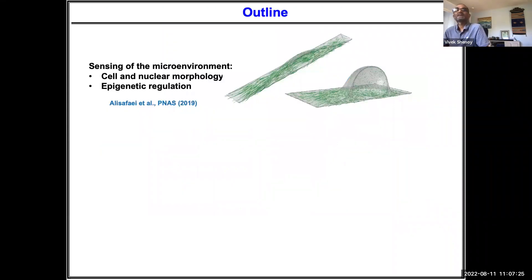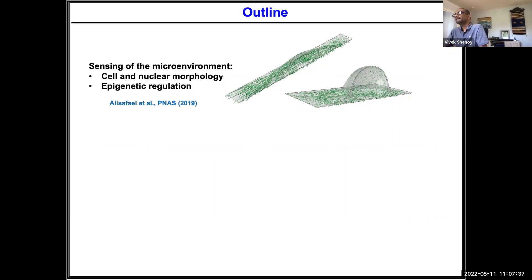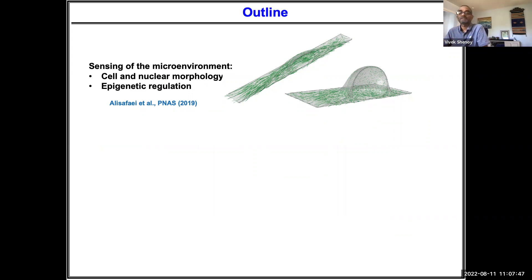I'm going to start by talking about things most of you know — how nuclear morphology depends on stiffness and cell shape. A lot of that is determined by what kind of contractile forces the cell can generate, depending on the shape or the microenvironment.